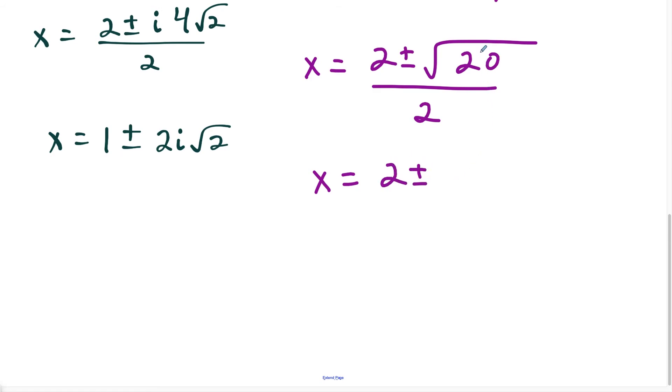So then from here, we just have to simplify this expression, and we're going to have x equals 2 plus or minus, and the square root of 20, if we work that out, the square root of 20 breaks down to the square root of 4 times the square root of 5. So this is going to become 2 square root of 5, because the square root of 4 is 2. So we have 2 square root of 5, all divided by 2.